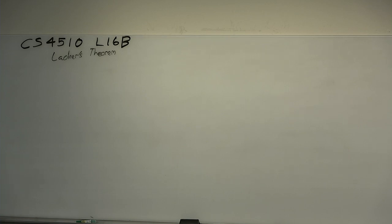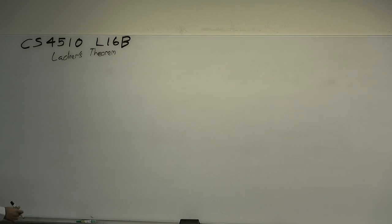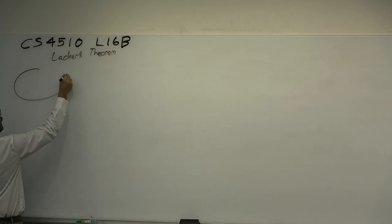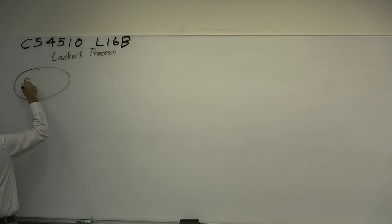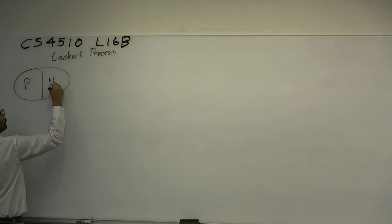Previously, we just proved the Cook-Levin theorem, and we already know through a series of reductions that there exist many NP-complete problems. The Cook-Levin theorem says if P does not equal NP, then there exist NP-complete problems. But what does that mean for the structure of NP versus P? We have two scenarios. We can have that all of NP which is not P is NP-complete.